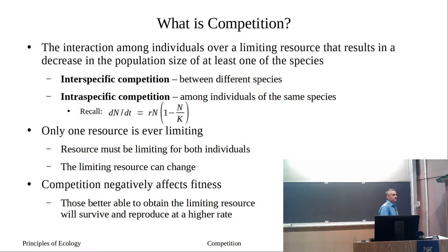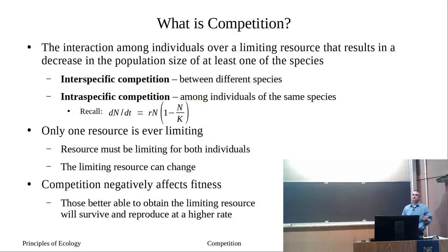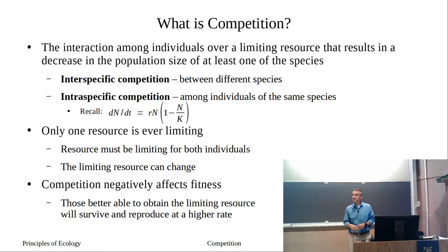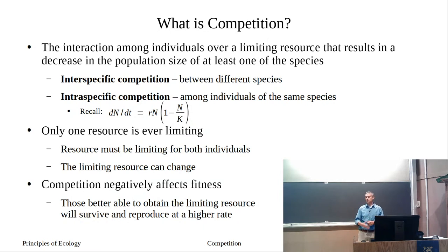This limiting resource has to be limiting for both individuals. You can't have a species limited by nitrogen and another limited by phosphorus — that's not competition; they're competing for different limiting resources. The limiting resource can also change from year to year, month to month, and that will change the outcome of competition.